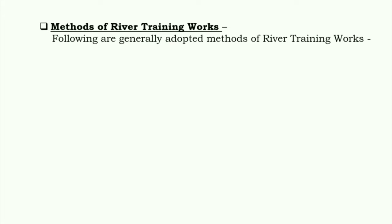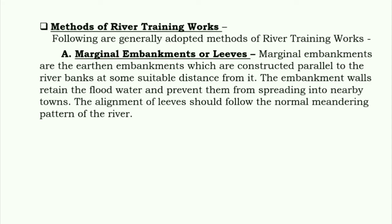The first method of river training works is marginal embankments, or levees. These are earthen embankments constructed parallel to the river banks at some suitable distance from it. The embankment walls retain the flood water to prevent it from spreading into nearby towns. The alignment of levees should follow the normal meandering pattern of the river.